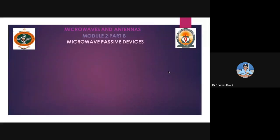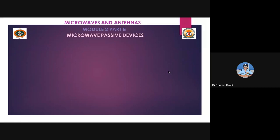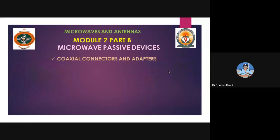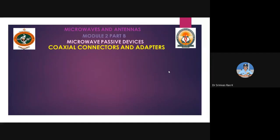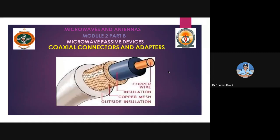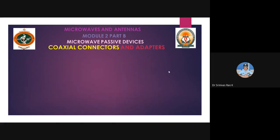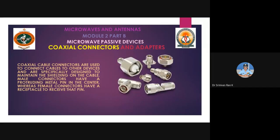Good afternoon students. Till now we have covered coaxial cables as part of microwave passive devices. We'll see different types - in the last class we covered coaxial connectors and adapters, attenuators and phase shifters, waveguide T's and magic T's. We'll be covering all these things. Basically, we covered the construction part of the coaxial cable.